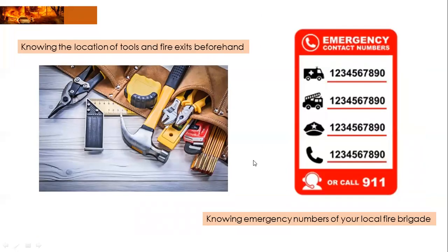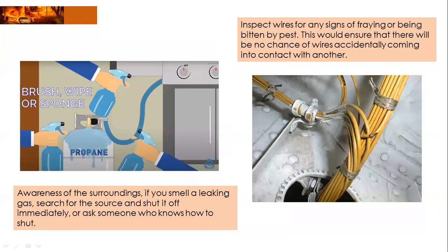You should know the location of tools and fire exits beforehand, and know the emergency numbers of your local fire brigade. Awareness of the surroundings is important — if you smell leaking gas, search for the source and shut it off immediately. There is what we call the brush, wipe, or sponge test: if you want to know if your LPG tank is leaking, spray bubbly soap onto the tank. If there are bubbles or exhausted gas coming from the tank, that is a sign of leaking. Also inspect wires regularly to know if they have been beaten or cut by pests, as that can also cause fire.